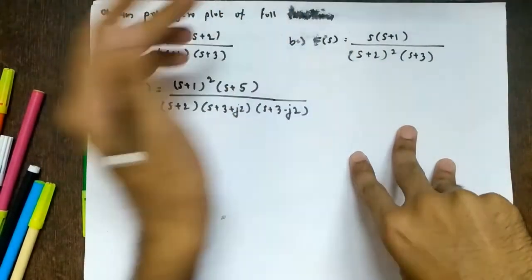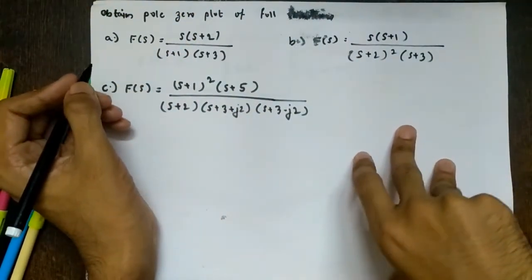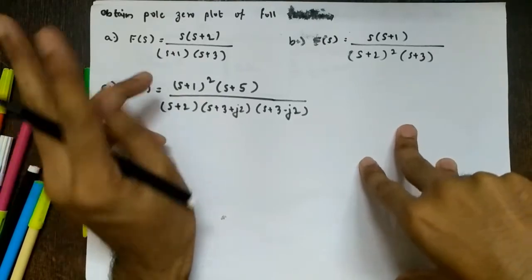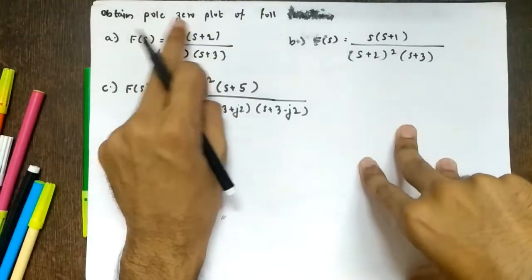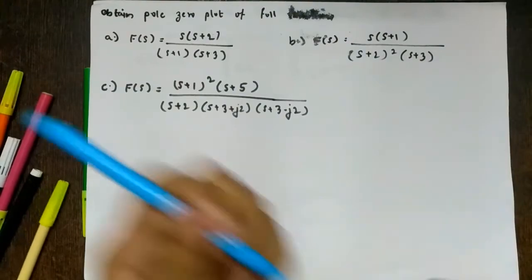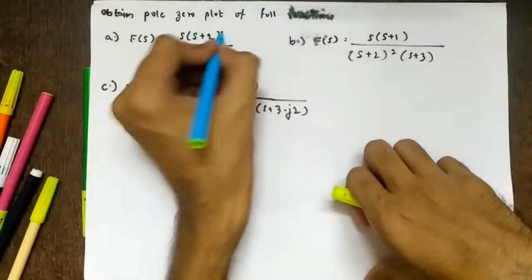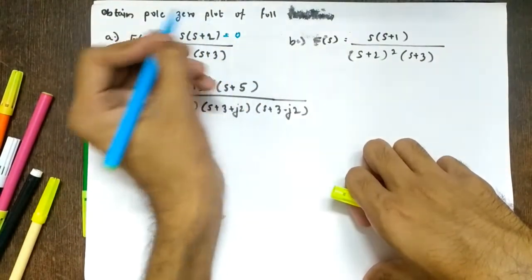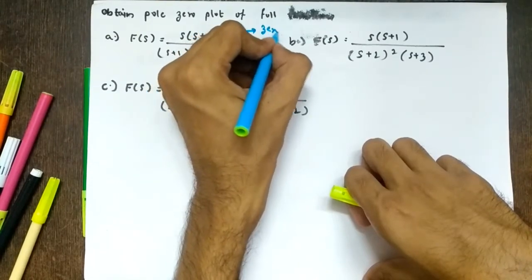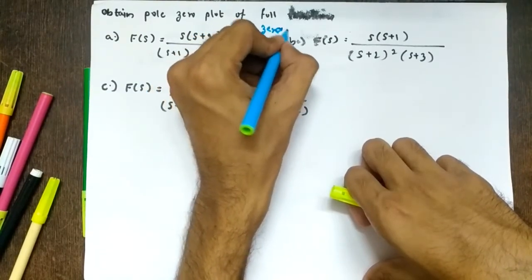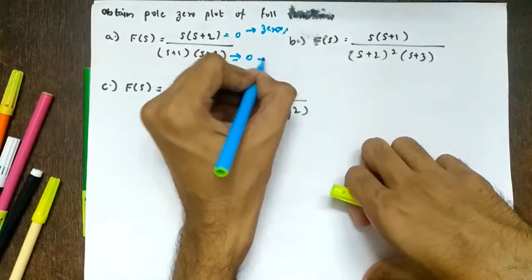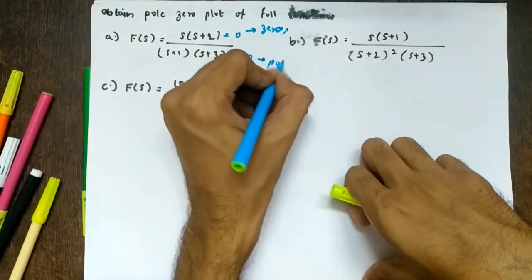There are two terms: zeros and poles. If we equate the numerator to zero, what we get are the zeros. If we equate the denominator to zero, what we get are the poles.